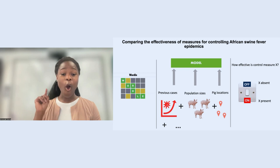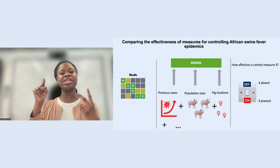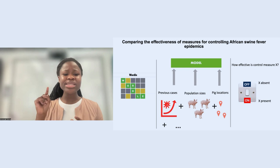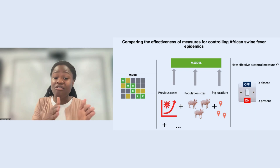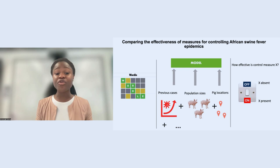We tested the effectiveness of control measures much like you would use a light switch — on to start a control measure, such as increased testing or trade restriction, and off to end it. By flipping these on-off controls, we studied how the presence or absence of a control measure influenced the number of cases guessed by the model, making it possible to compare case numbers across different control measures. A control measure was judged to be more effective if it resulted in fewer cases.